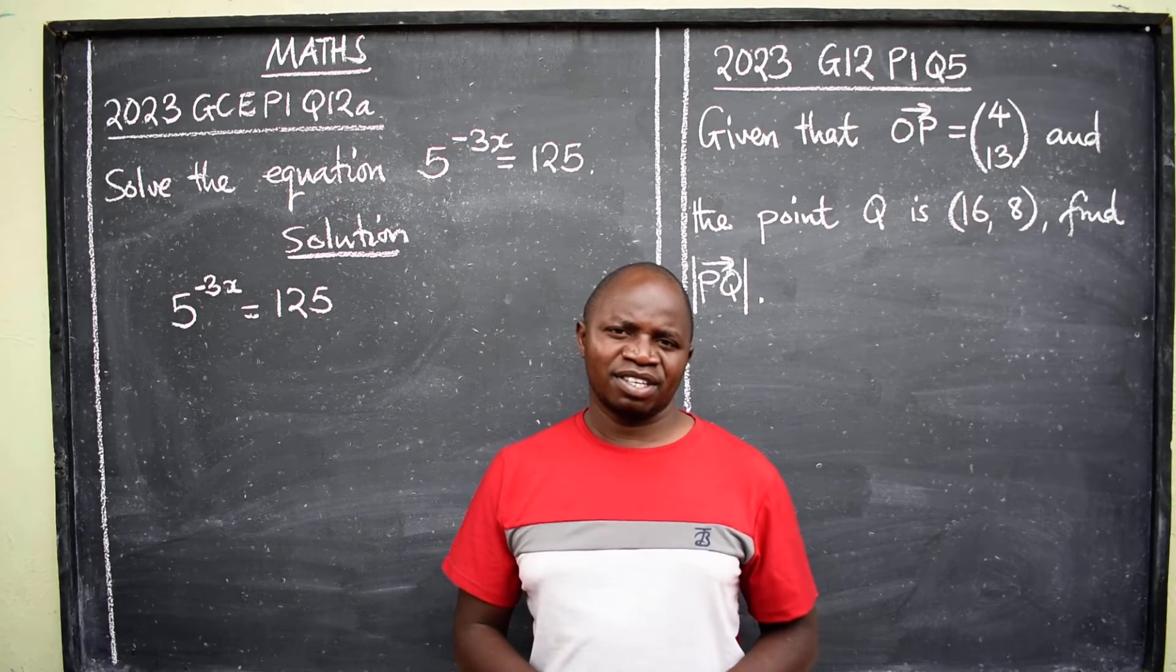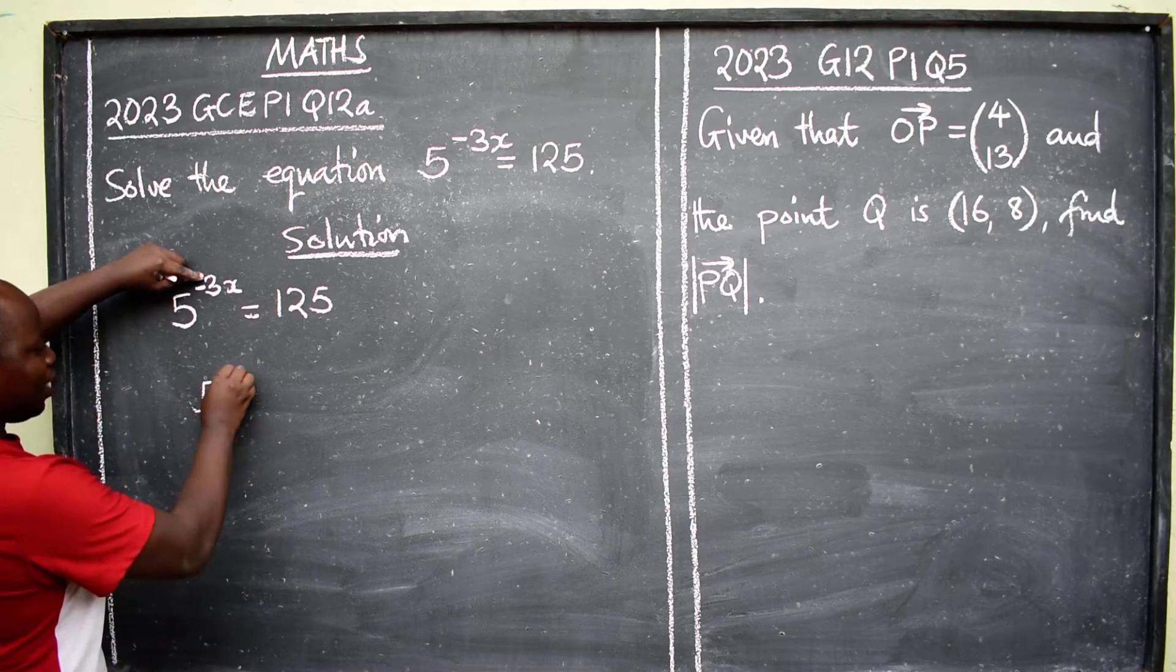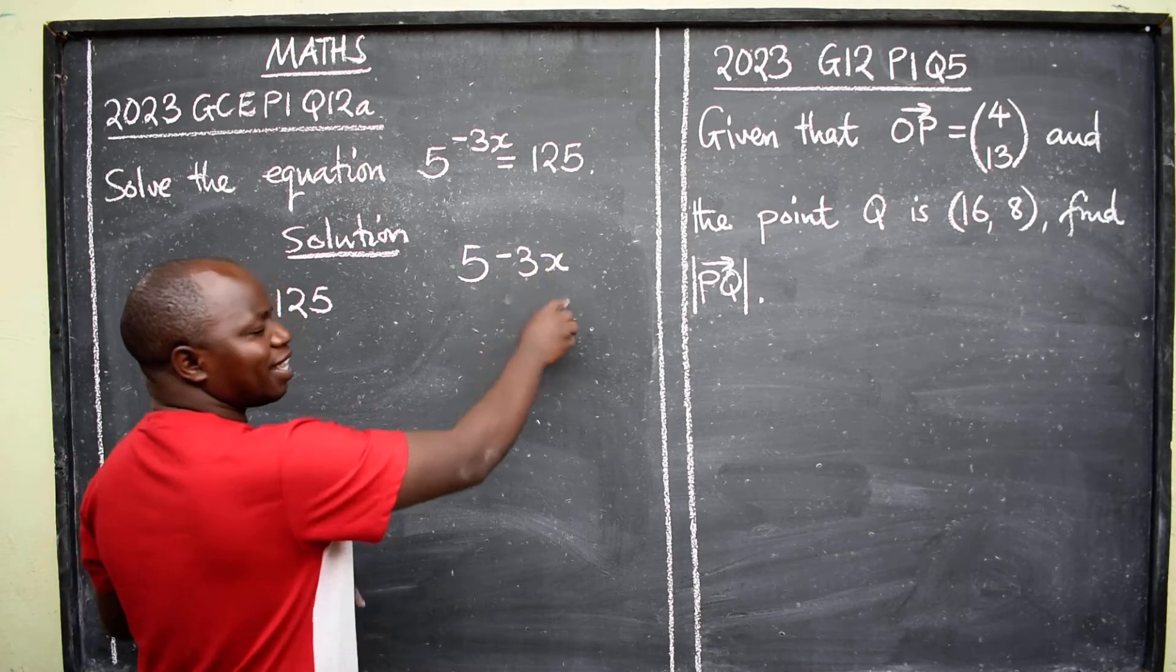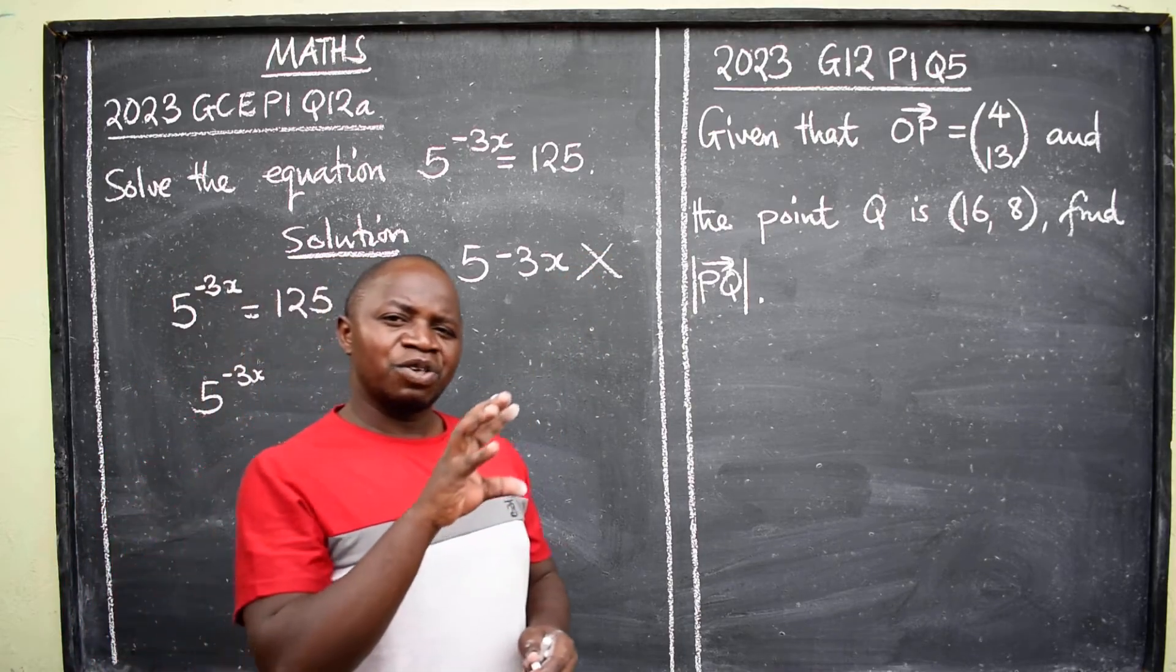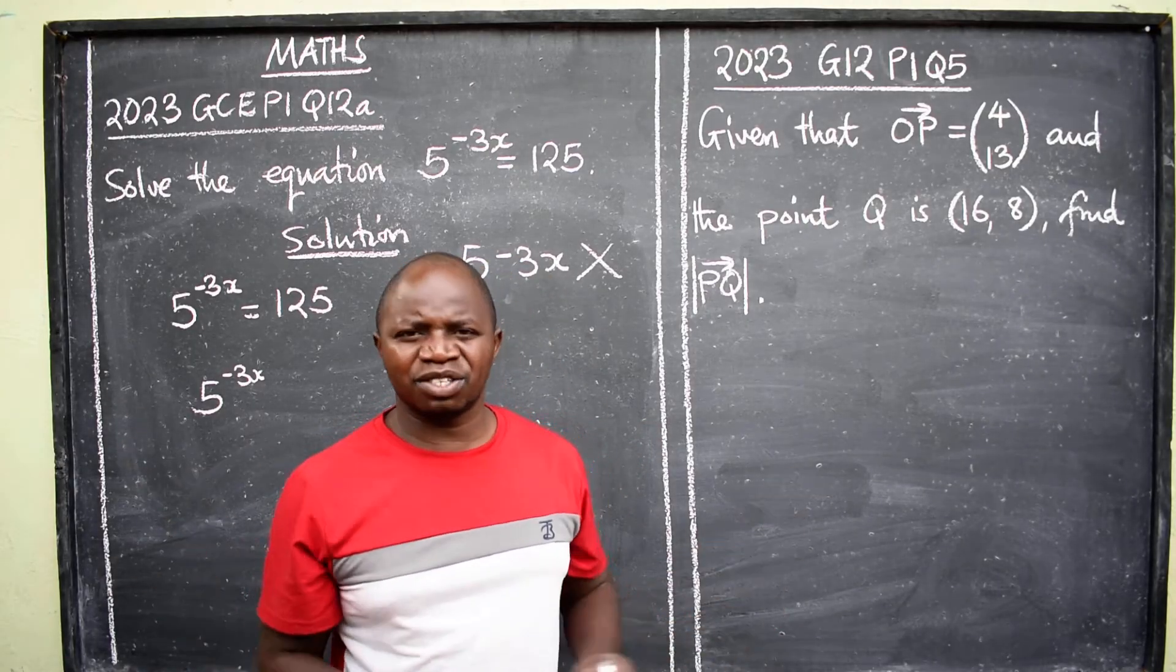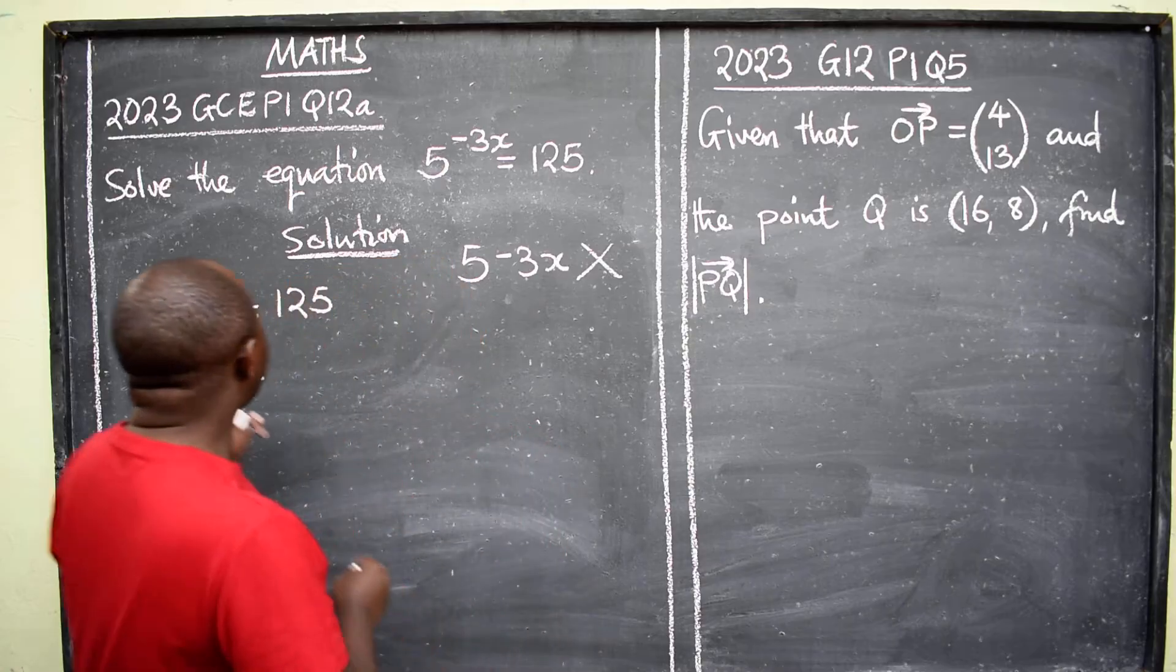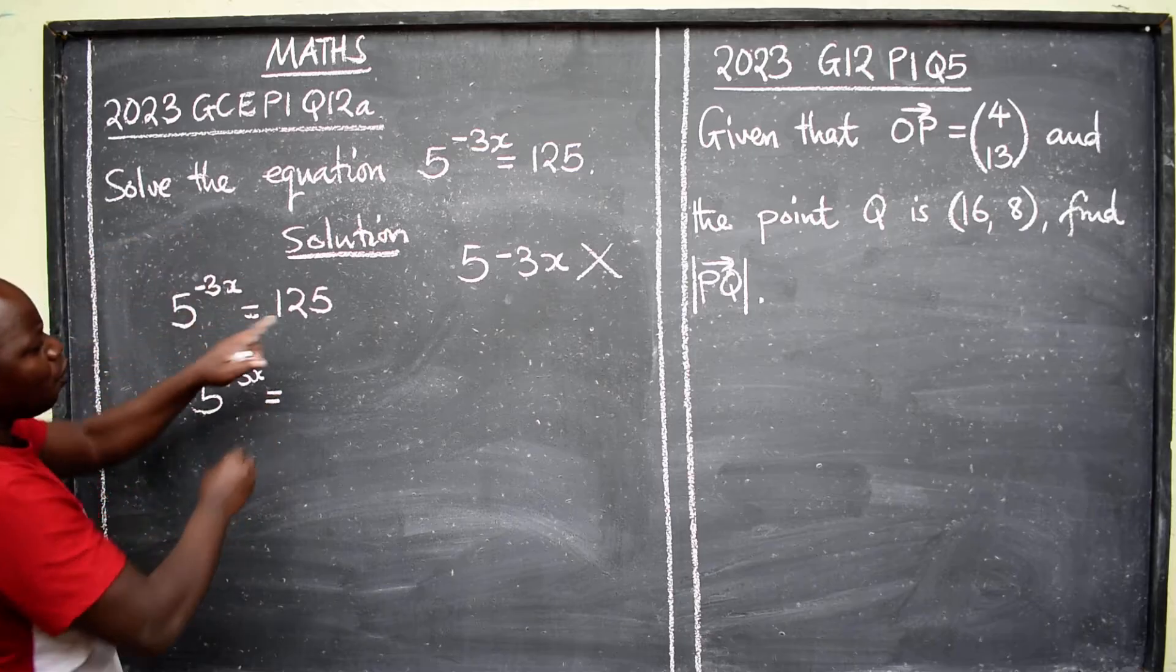On the other side here, 125. Is it possible to turn 125 in the base of 5? The answer is yes. How? Well, 5 to the power negative 3x. Look at the way I'm writing please. Write the way you are seeing the question. You don't want something that is not there.